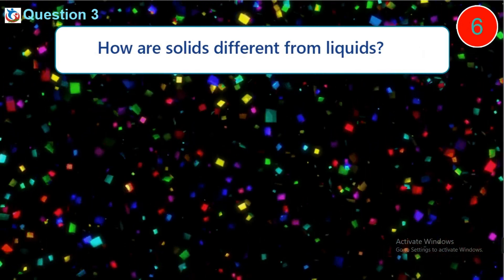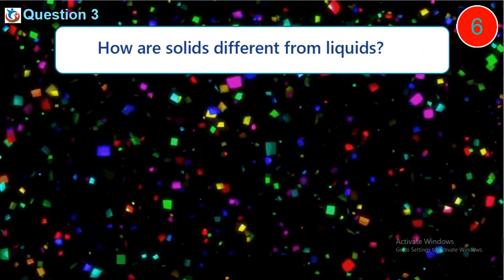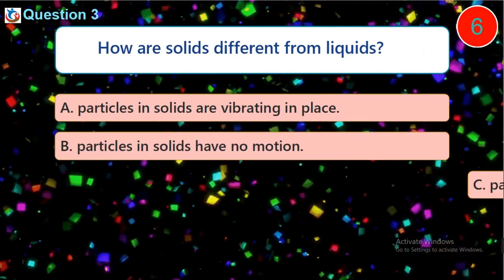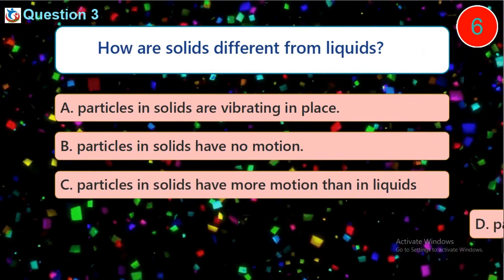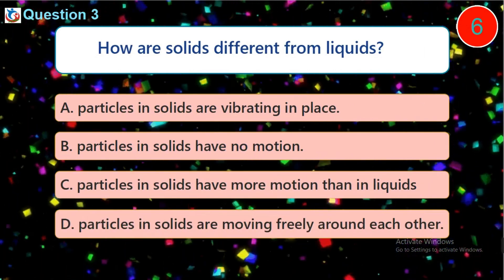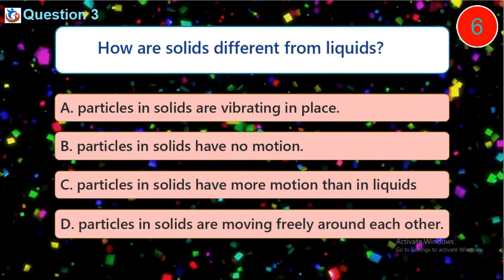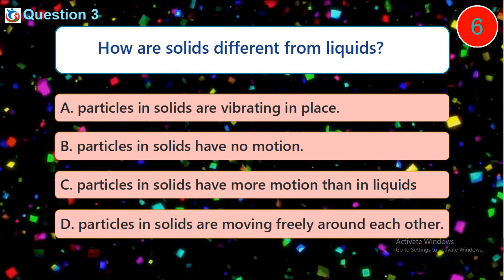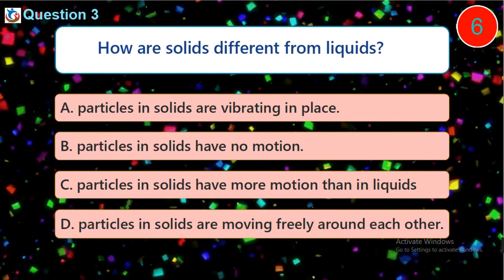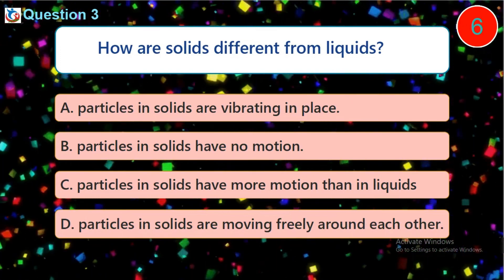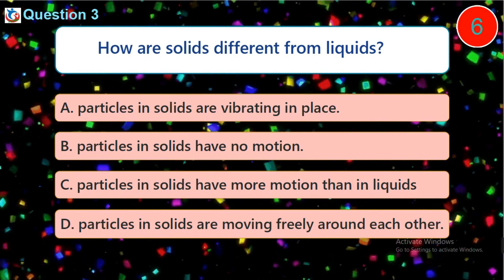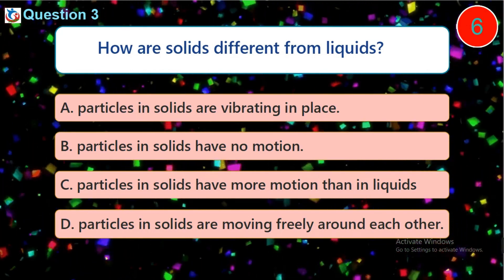Question 3. How are solids different from liquids? A. Particles in solids are vibrating in place. B. Particles in solids have no motion. C. Particles in solids have more motion than in liquids. D. Particles in solids are moving freely around each other.